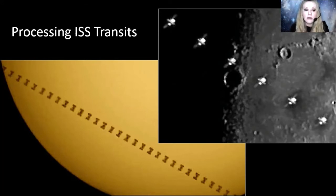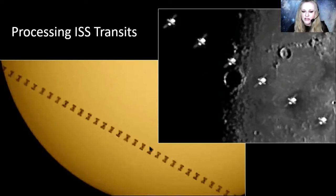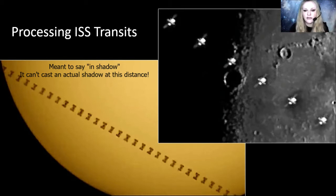If you have a solar filter on the front of the telescope, keep the finder scope covered, because even the magnification on that small finder scope is enough to permanently damage your eyes. Don't attempt a solar transit unless you have the proper filtration in place. I actually really like space station transits of the Sun because you get the silhouette of the space station, and quite often you can see its position slightly shift as it crosses the disk, which is really fun.